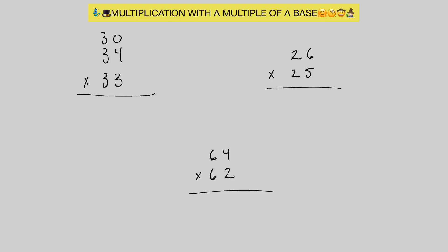We go about doing this the same way we do our multiplication near base numbers. We say 34 is plus 4 away from 30, and 33 is plus 3 away from 30. Our answer comes in two parts: left hand side and right hand side. For the left hand side, we either add 4 to 33, or add 3 to 34. Either way we get the same number — we get 37.